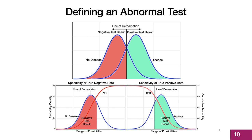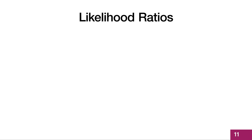We teach students about sensitivity and specificity, but the definitions are difficult to memorize because the terms have different units for the numerator and denominator. The terms true negative rate for specificity and true positive rate for sensitivity are better because these terms almost define themselves. But we can do even better — we can use likelihood ratios, which combine sensitivity and specificity into a single number.